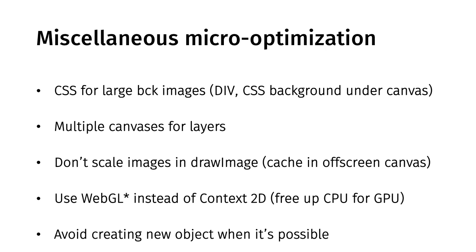I'm not talking about memory optimization right now — I have a full presentation about it — but every time you're creating an object, think about the garbage collector and the process that will need to free up those objects. If there's a way to optimize what you're doing while still having great code, do it. Some people talk about using a pool of objects — an array of four or five objects that you reuse — but that may make your code unreadable and really hard to maintain.